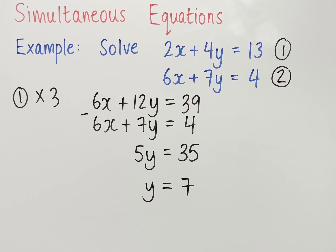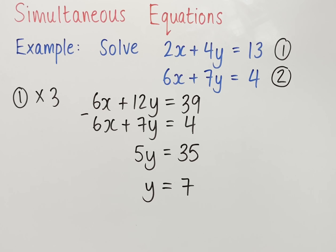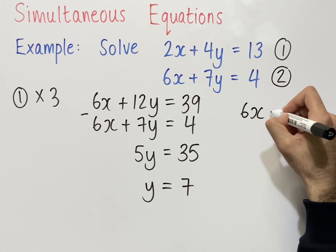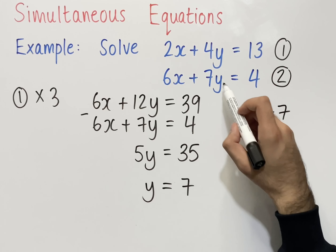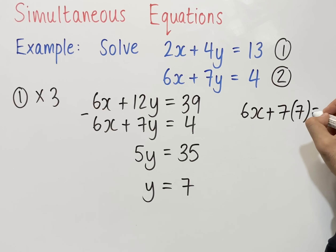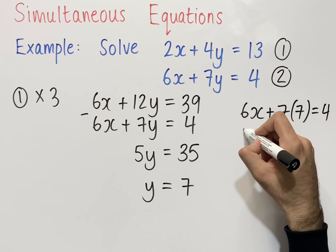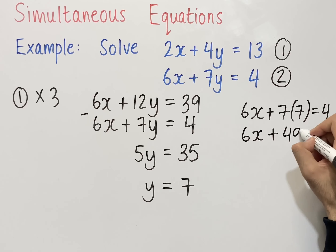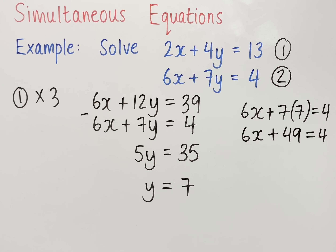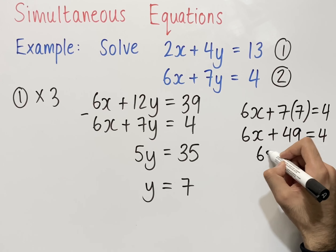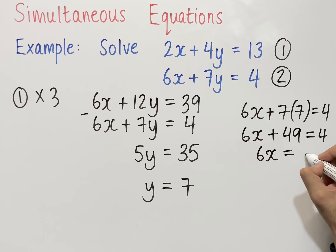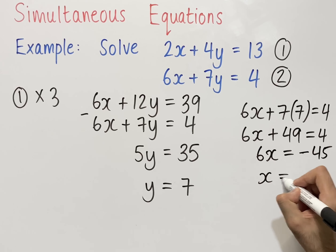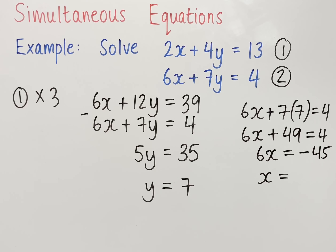Now to work out what x is, we substitute back into one of the equations. Substituting into equation 2 gives us: 6x plus 7 times 7 equals 4. Expanding: 6x plus 49 equals 4. Taking away 49 from both sides: 6x equals 4 minus 49, which is minus 45. Dividing both sides by 6, x equals minus 7.5.